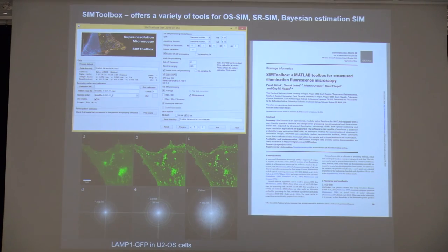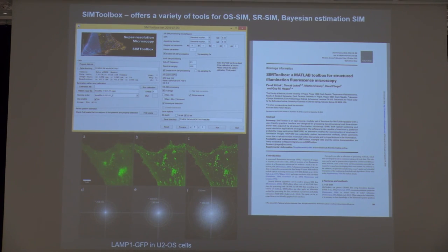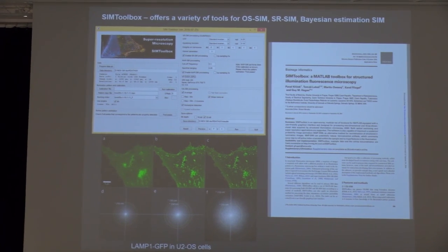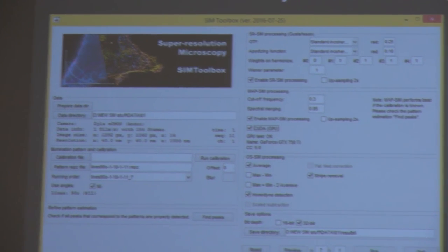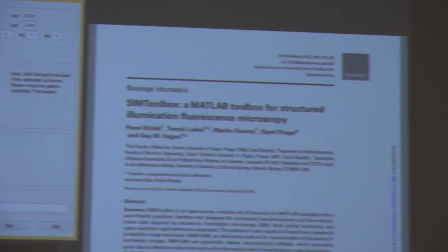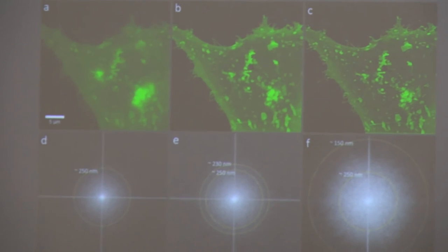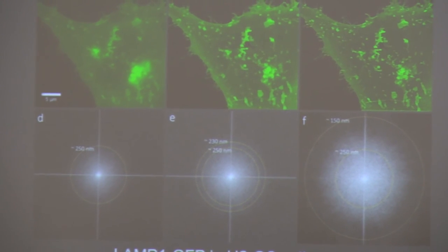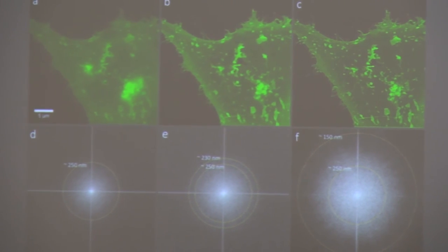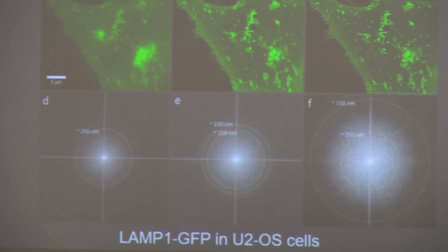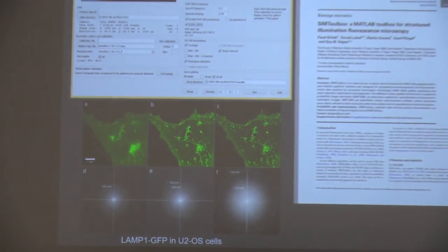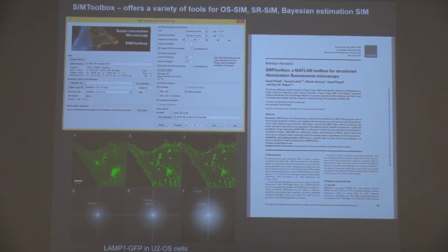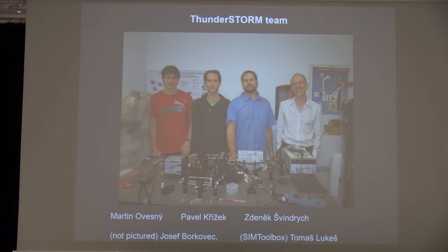Our other project is SIM Toolbox, for structured illumination microscopy. It has a similar feel as ThunderStorm in that you have several choices for all the different steps in the algorithm. We have several different options for optical sectioning SIM, super-resolution SIM, and also SIM using Bayesian estimation. This was published in Bioinformatics as well. At the bottom are live cell movies of a lysosome-associated membrane protein labeled with GFP. I'd like to thank the ThunderStorm team.